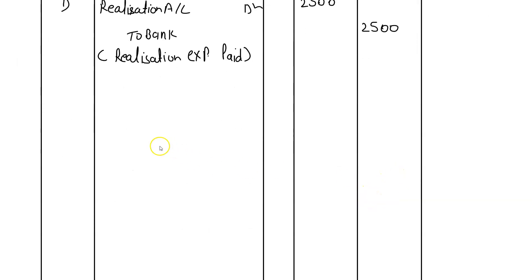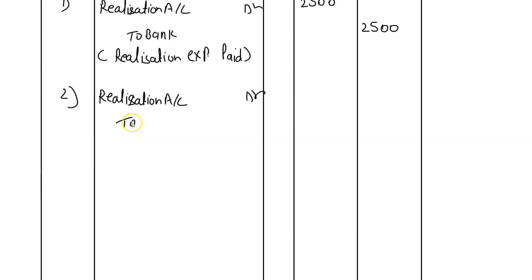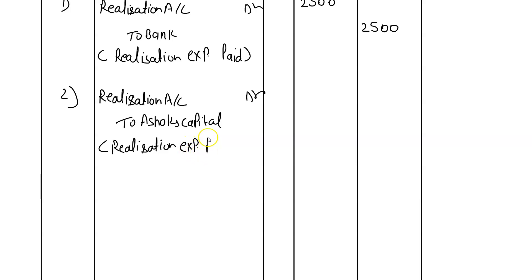Entry number two: realization expense was paid by Ashok. You make the same entry, but since Ashok paid it, we write 'To Ashok's Capital' instead of bank. So the entry is: Realization Account debit, To Ashok's Capital. Narration: 'realization expense paid by Ashok'. Amount is Rs. 3000.